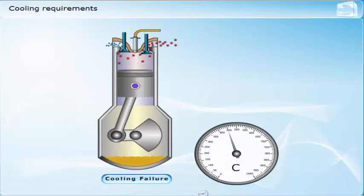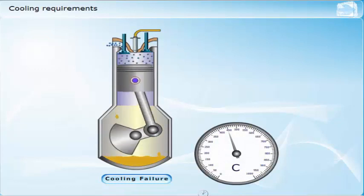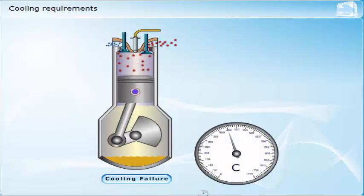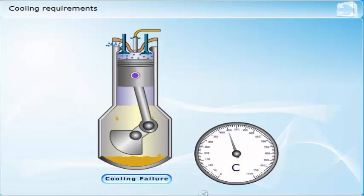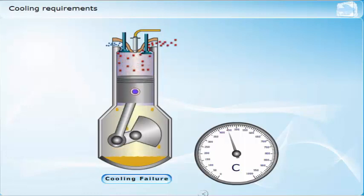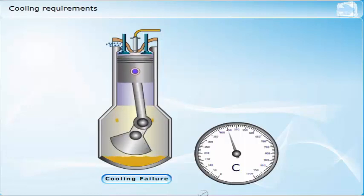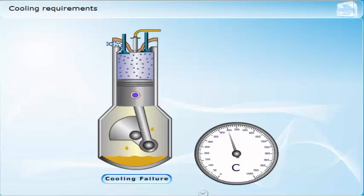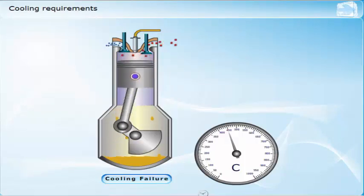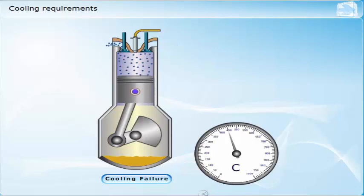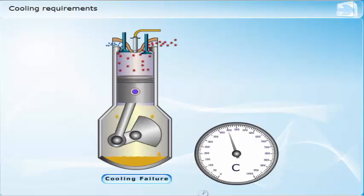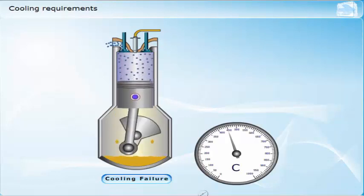The diesel engine components which are heated directly by the combustion process are the piston and cylinder liner, including any firing ring, the cylinder cover and fittings including exhaust valves, inlet valves, and fuel injector, and the piston rings — in particular, the top ring.